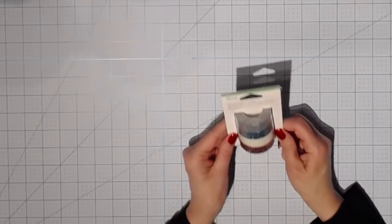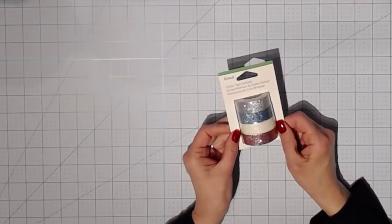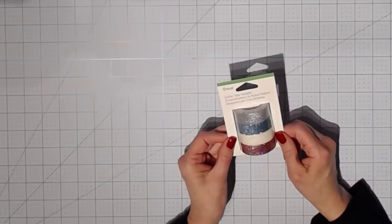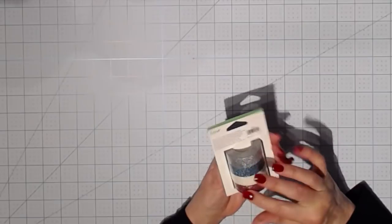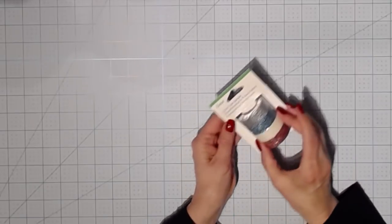So our first item is a glitter tape sampler pack. It's gorgeous, especially for the holiday season. Wow! Can do some beautiful crafts with this. That's really pretty.